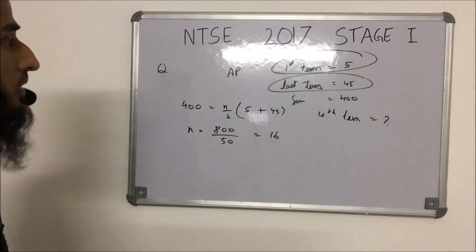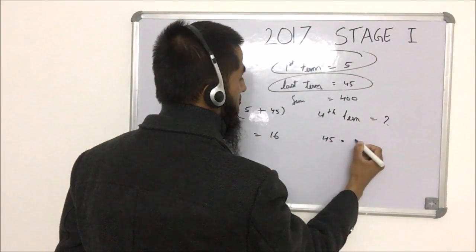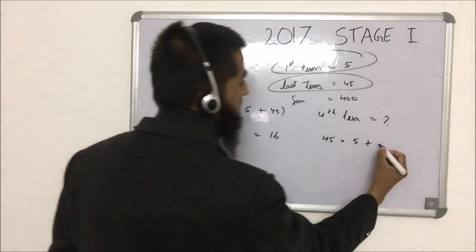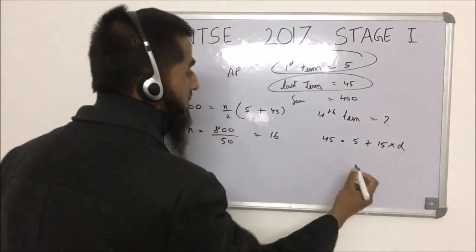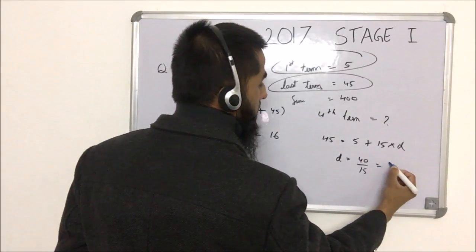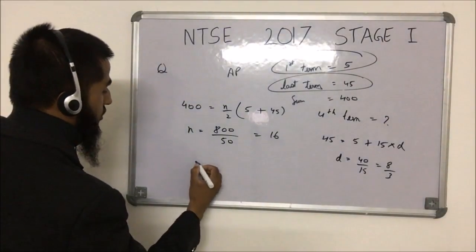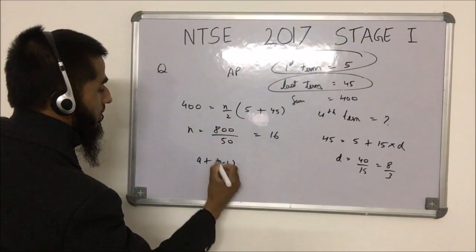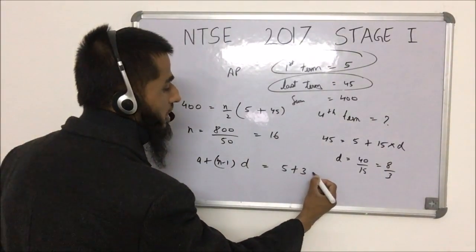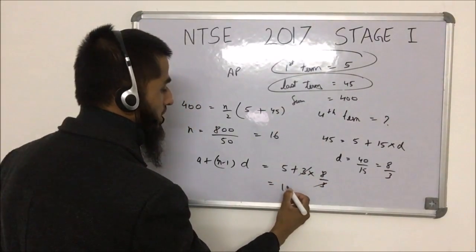Now applying the general term formula to get the common difference: the last term is 45 = 5 + (16−1)d, so 40 = 15d, giving d = 8/3. The fourth term is a + (4−1)d = 5 + 3 × (8/3) = 5 + 8 = 13.